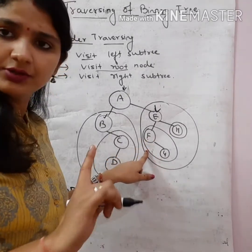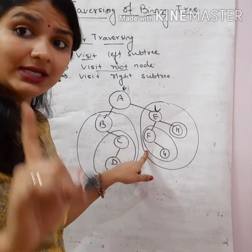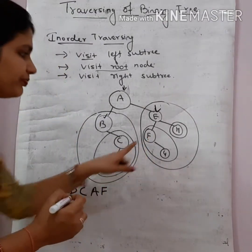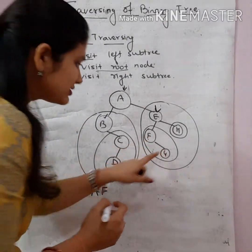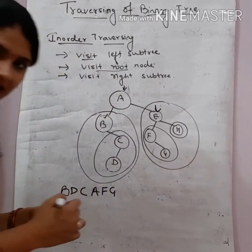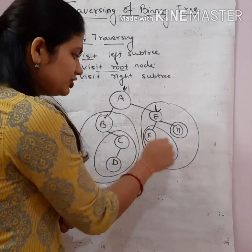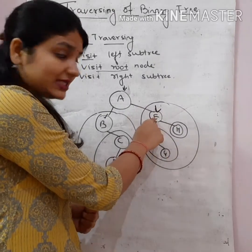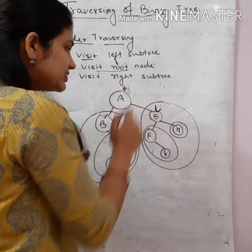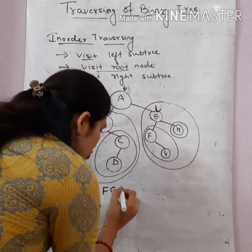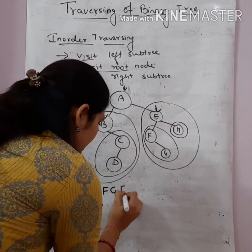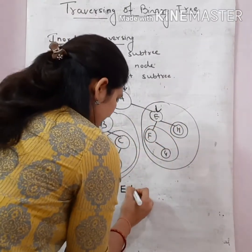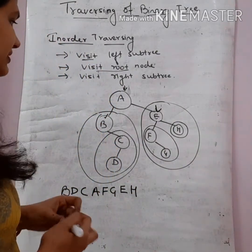When we come to E's left subtree, F is the root node. F has no left subtree, so we first visit the root node F, then visit its right child G. After completing the left subtree, we visit the root node E. Finally we visit the right side.